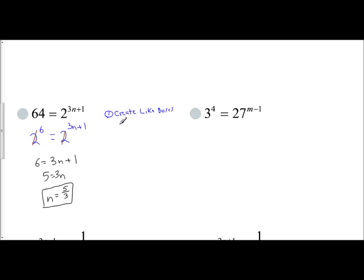The bottom line is if you don't have like bases, create them. 3^4, 27^(n-1). So 3 is nicer than 27. It's smaller. Let's keep the three. I know that 27 is 3^3. Now here's the trick. Your exponent here on the outside is an expression. So when you take 27 and change it to 3^3, you're going to have to put it inside of a parentheses because this expression, n minus one, is going to have to be distributed to that exponent. So really the problem says 3^4 = 3, distribute to the 3m - 3 power.